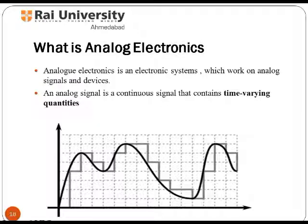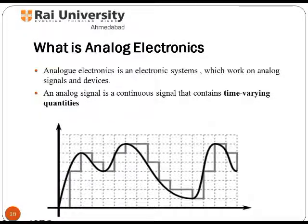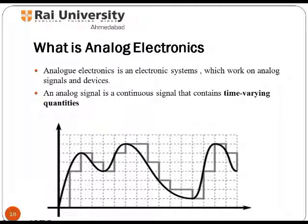Analog electronics may be defined as an electronic system which works on analog signals and devices with continuously variable signals. An analog signal uses some elements of a medium to convey the signal information. Analog signals can take any value from a given range, and each unique signal value represents different information.